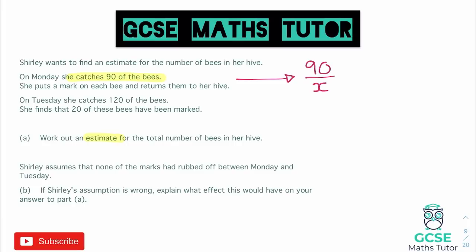On Tuesday she catches 120 bees and finds that 20 of them have been marked. So for the second capture, thinking about how many bees have been marked, 20 out of 120 have been marked. There are lots of different ways to approach the next step, so if you have a different method that's absolutely fine. What I'm going to do is set these two samples equal to one another since they should be in proportion — so 90 over X is equivalent to 20 over 120.